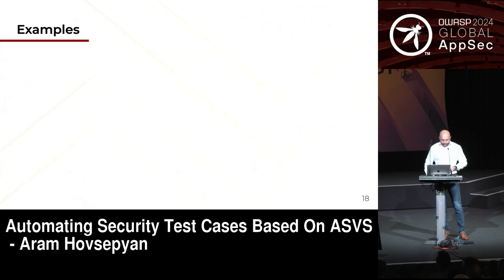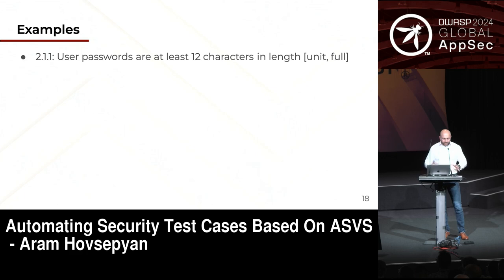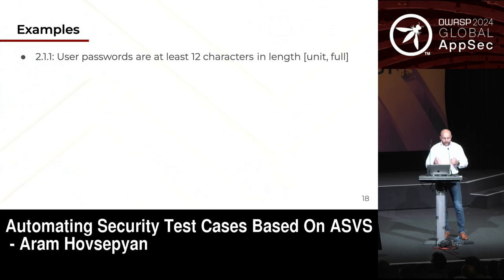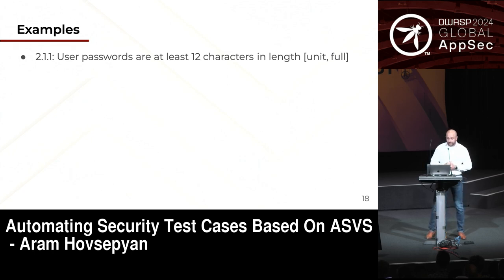Some examples — and some requirements are open to interpretation, which I'll return to in the threats to validity section. One ASVS requirement is that user passwords are at least 12 characters in length. Obviously you can easily write a unit test for this — I hope you already have. It's very easy to do, and it's fully automatable.